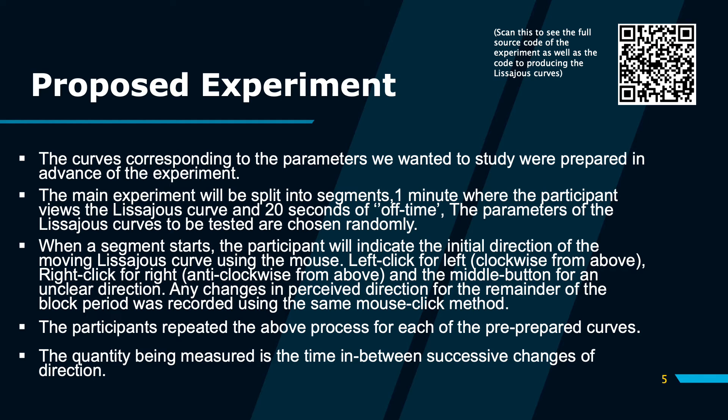My job during the EUROS project was to actually design and implement the experiment we would use to test the predictions of our model. This included producing the Lissajous curves as a video format to be played at different rotating frequencies, and the actual Python script to record the time between the directions changing. This was all done using Python 3.9, and while the experimental design was done in collaboration between me and my supervisors, the actual implementation of the experiment was done solely by myself.